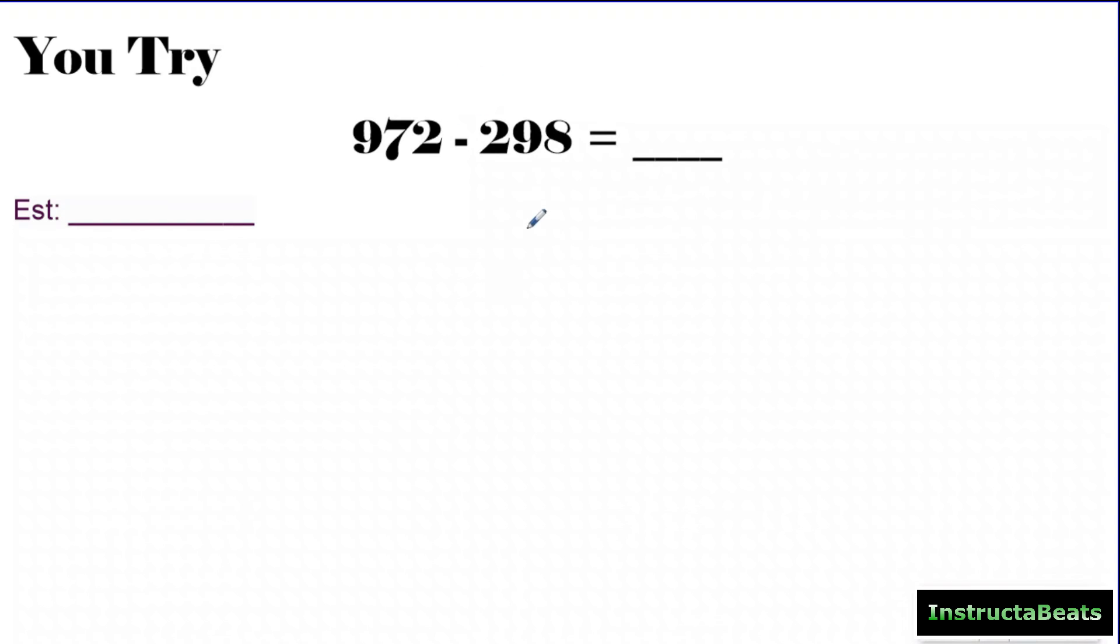Hopefully, you just paused it, and now we're checking it. So my standard algorithm steps, I'm going to line up, I'm going to put the bigger number on top. And I'm going to line up my place values, making sure my ones, my tens, and my hundreds are lined up. I'm going to start subtracting with my ones place, and then go right to left.